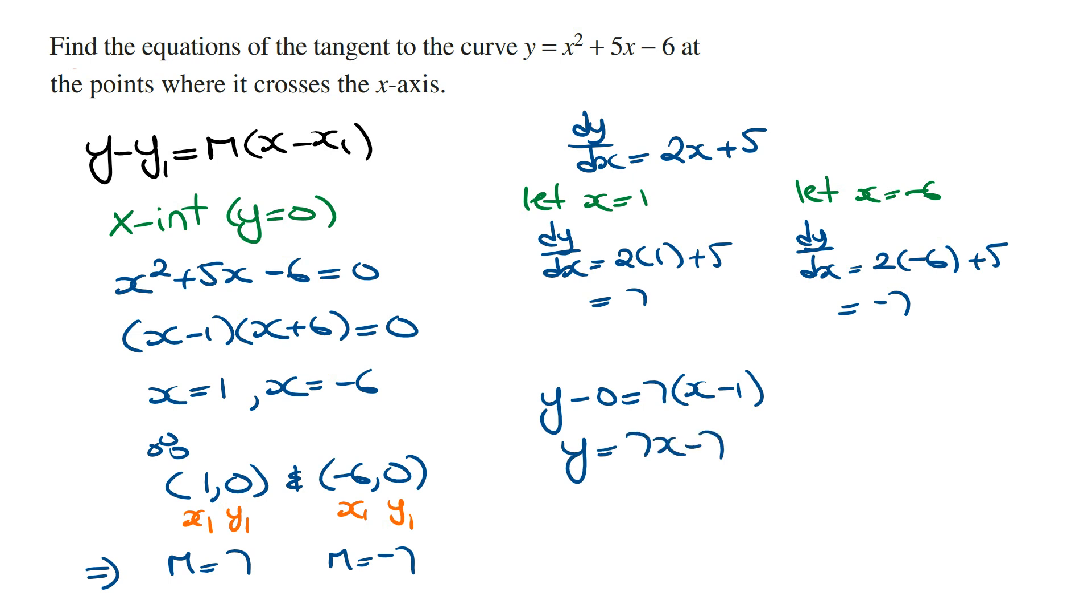And at the point (-6, 0), the equation of the tangent line is going to be y minus 0 equals minus 7 times x minus minus 6, which is x plus 6. And so solving for y, this is going to be minus 7x minus 42.